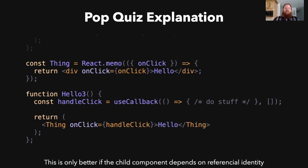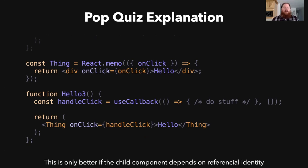Alternatively, if we were passing the callback into something that is memoized — using a component called Thing instead of div, where Thing is memoized — then it can make a difference. In this particular example it's still just a div with an onClick, so it doesn't make a big difference here. Showing a full example that demonstrates an actual need for useCallback takes quite a bit of space. It happens — it's just pretty rare. More often than not, you don't need it.